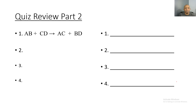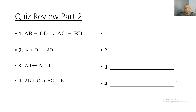Now let's move on to quiz review part two. Write down the formulas on the left hand side and I'll give you one minute to answer all four questions. Let's look at the first one: AB plus CD yields AC plus BD — two things got replaced, so that's going to be a double replacement reaction.